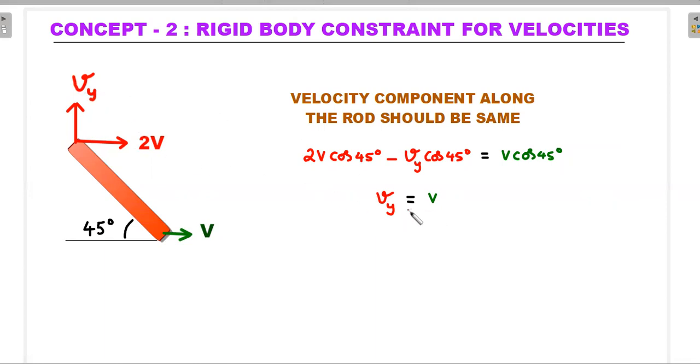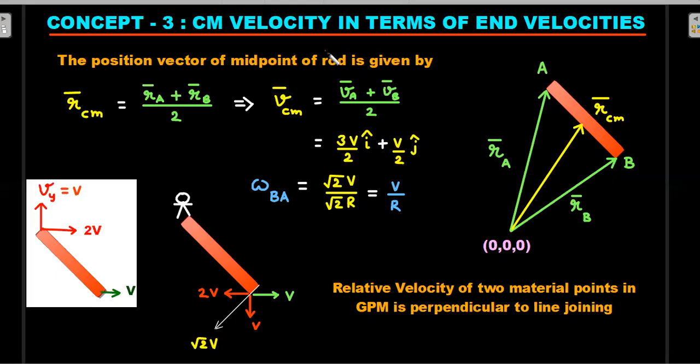With concept one we found this 2v, with concept two we found vy also equal to v. Carrying forward these two into the next one, concept number three, which is the highlight of this particular video. Some of you would have already guessed it: how to find the center of mass velocity of the rod when the end velocities are known. Center of mass of the rod when end velocities are known, we'll use vector algebra which is very straightforward for a 10th class student.